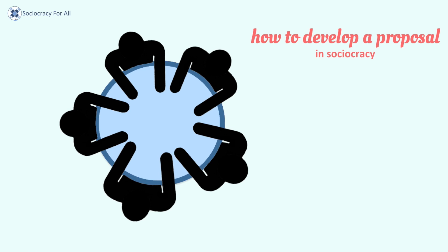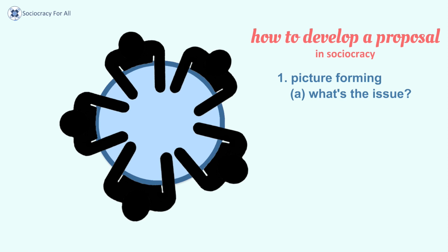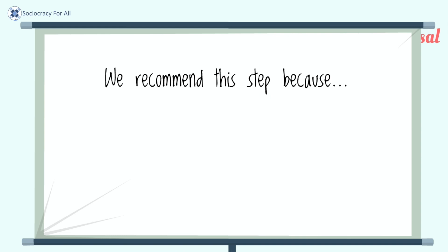You start with picture farming. First, they have to understand what is the issue they're trying to tackle and why are they making policy. It is important to get a good understanding so everyone's on the same page. When we make sure that everybody understands first what brought this topic to the group, we will save time in the end.